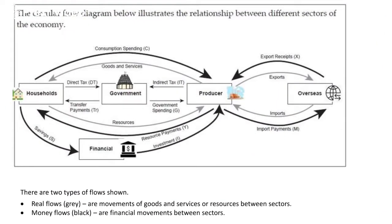There are two types of flows: real flows and money flows. The lines between the government and the households — households pay direct tax, so when you get paid from your job, before you get the money in the bank, some of that goes to the government as tax. The line going from the government to the households is called transfer payments, and that's in terms of benefits — any type of benefit a household might receive from the government, such as child support or job support.